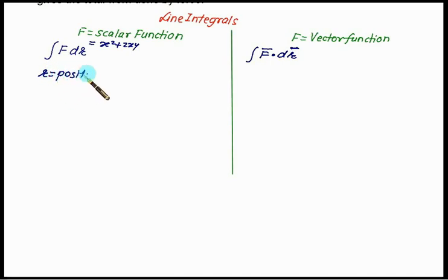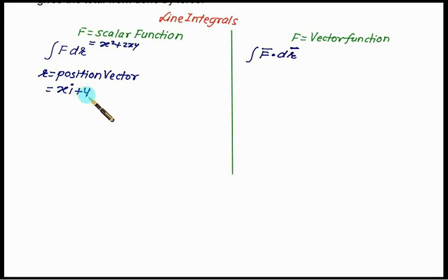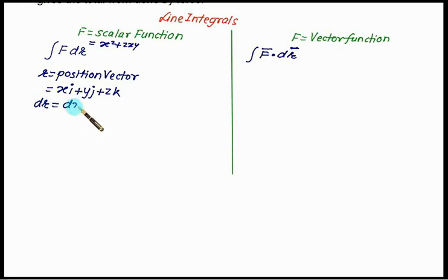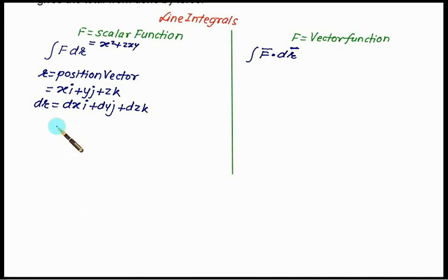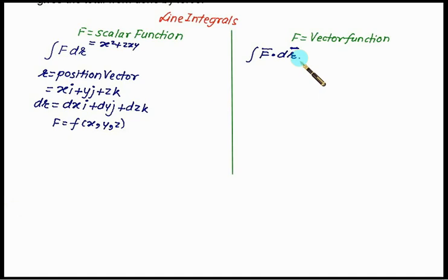For a vector function, there are always terms of i and j present, and we want to find the integral of f-bar dot dr-bar. We are interested in two integrals: the line integral of a scalar function and of a vector function. The position vector r-bar gives position from the origin as xi plus yj, where x, y, and z are coordinates of the given point. We can obtain dr as dxi plus dyj plus dzk.